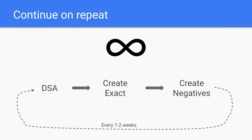Then you just go into an infinite loop. You have DSA working for you, generating new keywords that you haven't created before. You go to the search query report, check the keywords, add bad keywords to negatives and good keywords to exact and phrase match, and then just continue doing that every one or two weeks depending on your spend. I've worked with accounts that had enough data to do this every day for two weeks, and also accounts that didn't have enough data and required doing it only every two months. What's important is that you use DSA as a generator for new keywords instead of your own brain, and bring order to your campaigns.